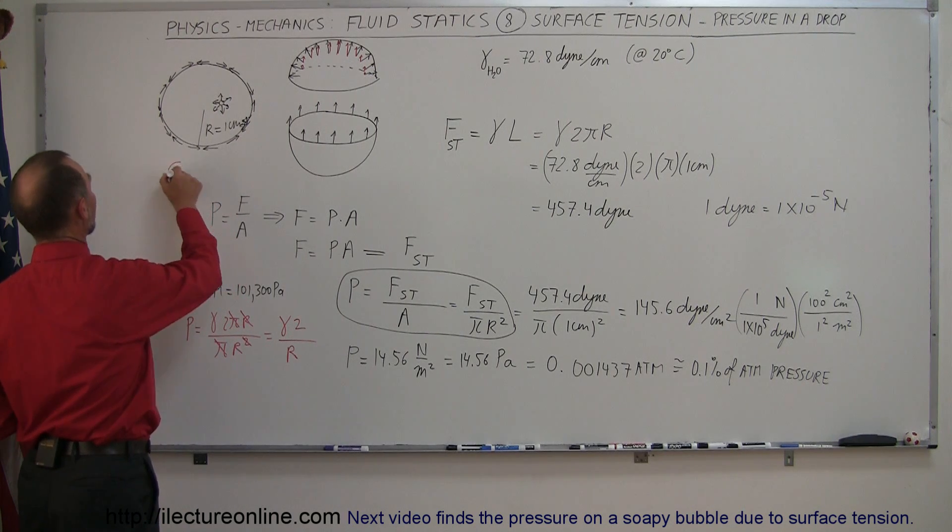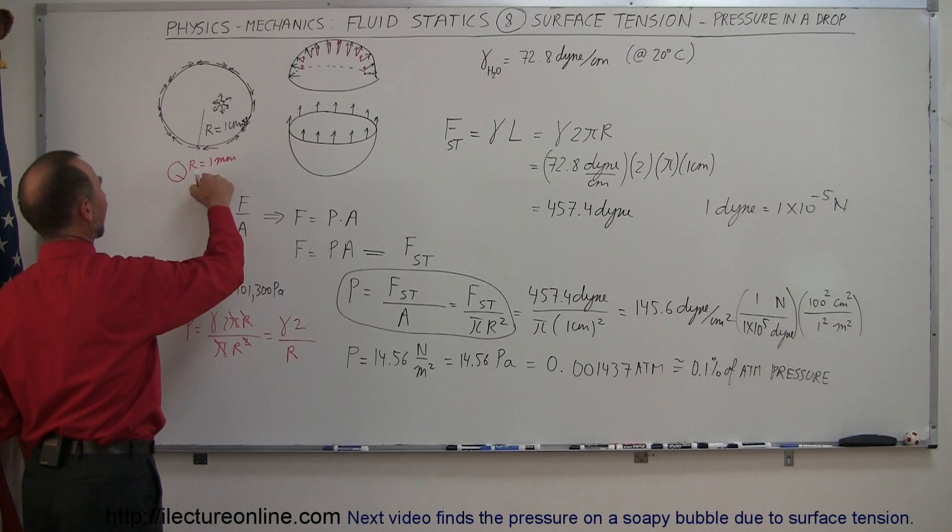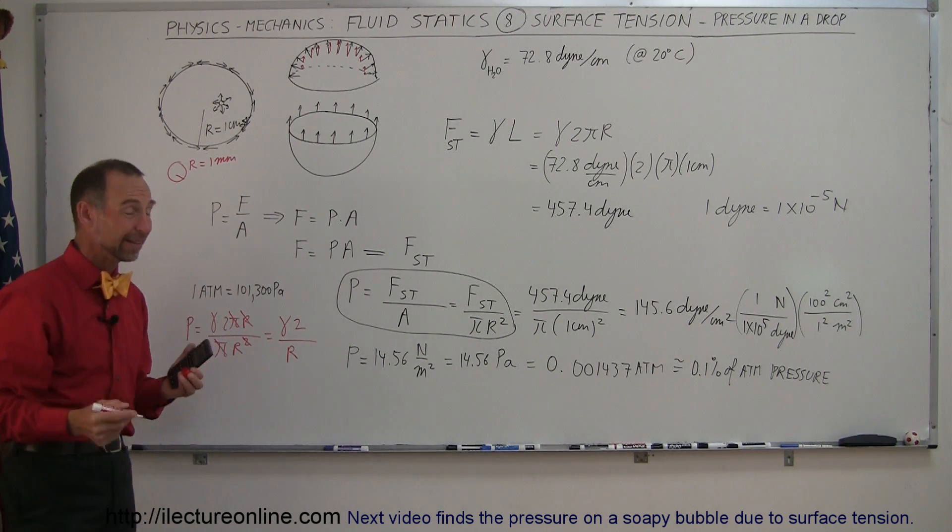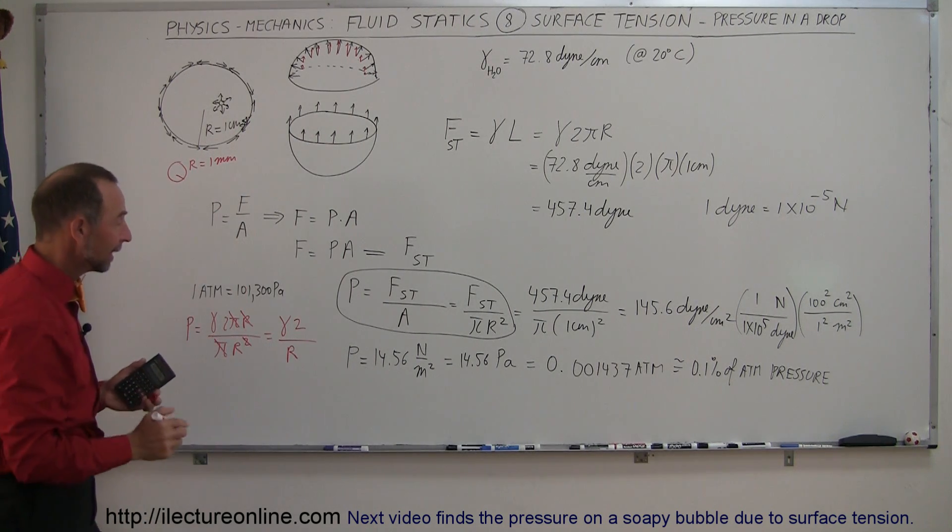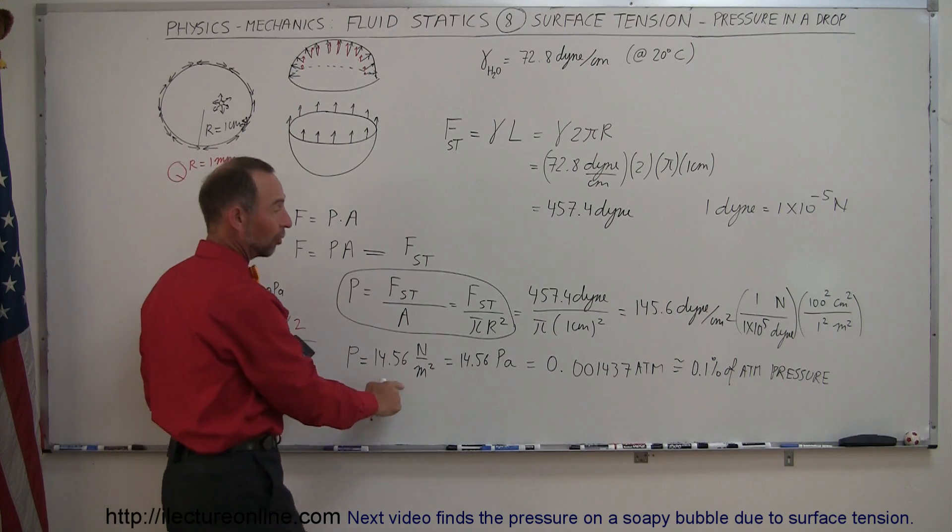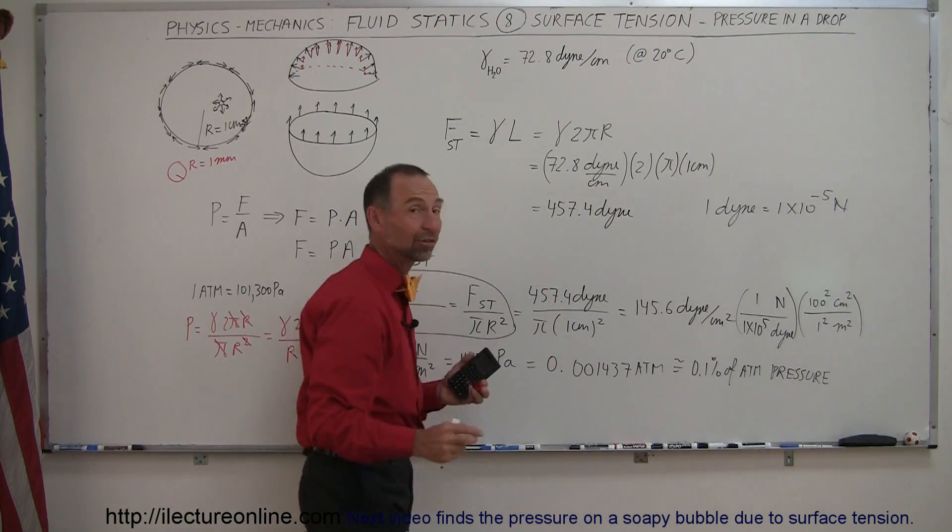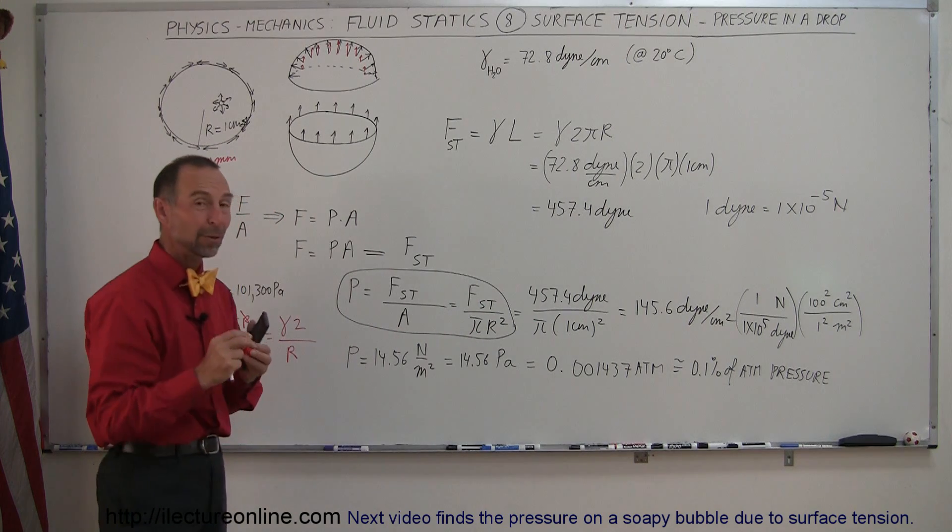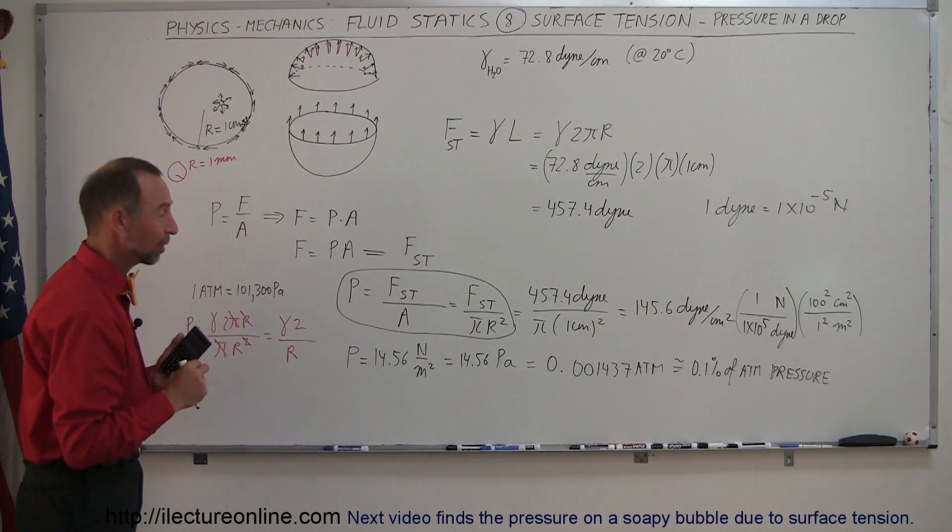So if I now take a water drop where the radius is only one millimeter, 10 times as small as that, one-tenth I should say of the centimeter, then the pressure would be 10 times as large. So instead of being 0.1 percent of atmospheric pressure, now the pressure of a water drop would be 1 percent of atmospheric pressure.